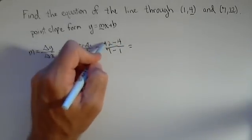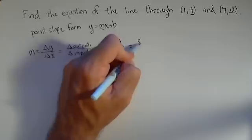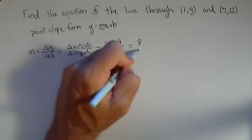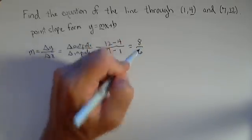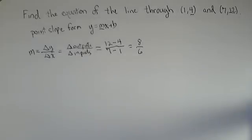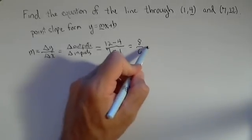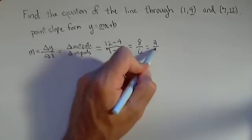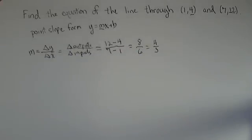So we calculate this, and we have 12 minus 4 is equal to 8. 7 minus 1 is equal to 6. When we get a fraction, we're going to go ahead and reduce it. And I'm going to do this problem in fractions. So that reduces down to 4 thirds, because I can divide a 2 out of each of them.